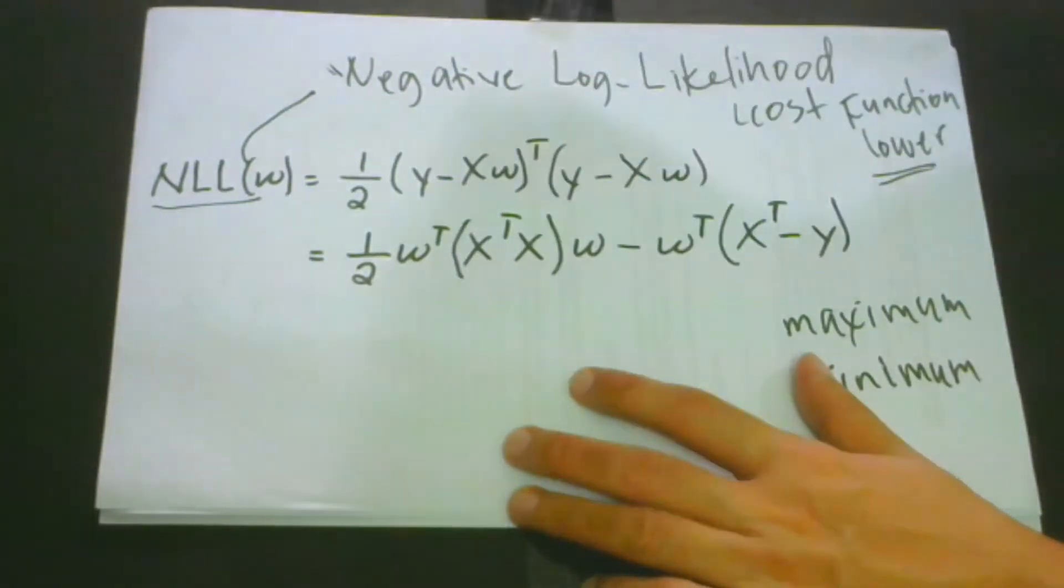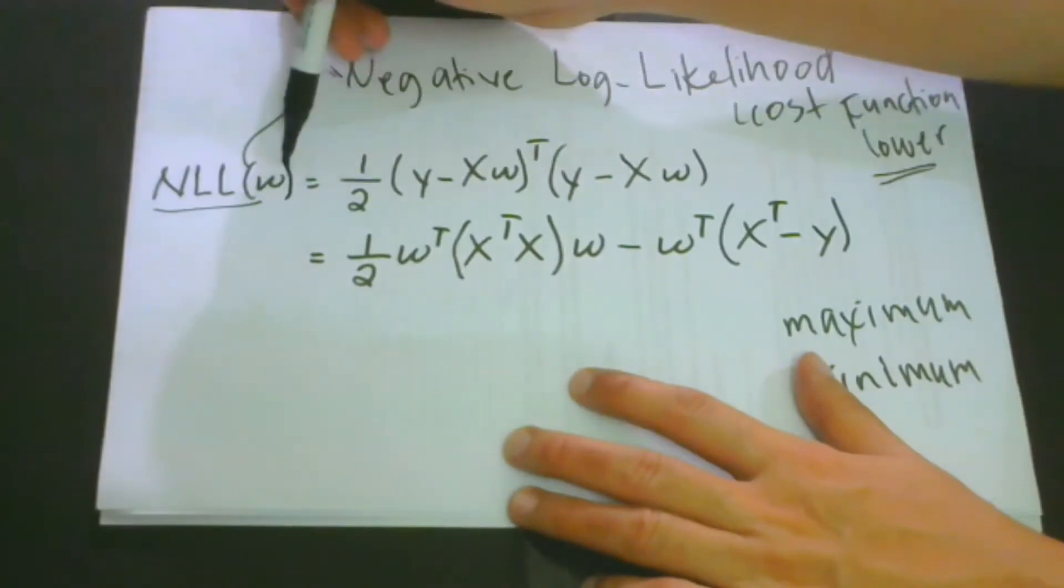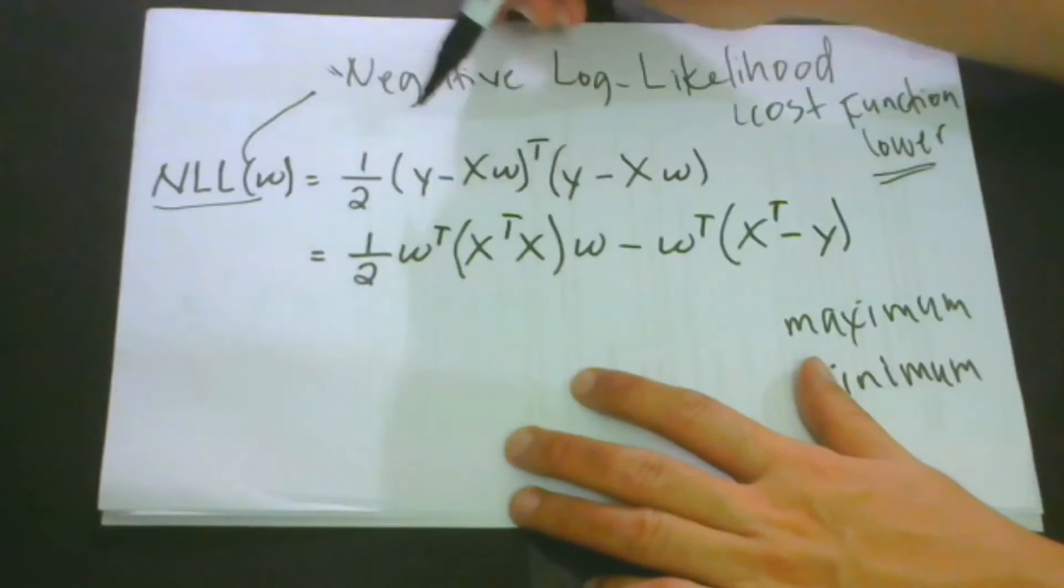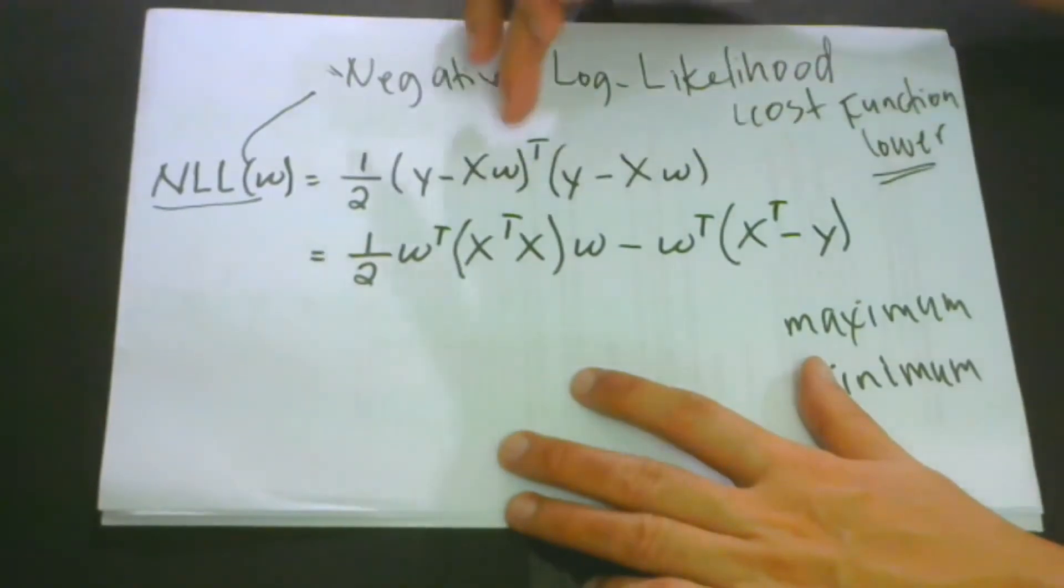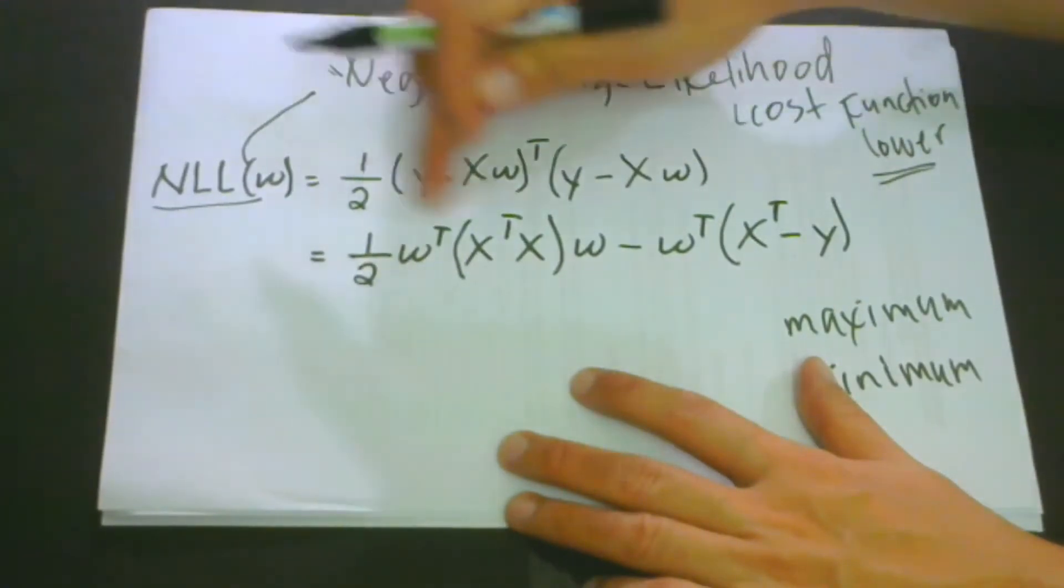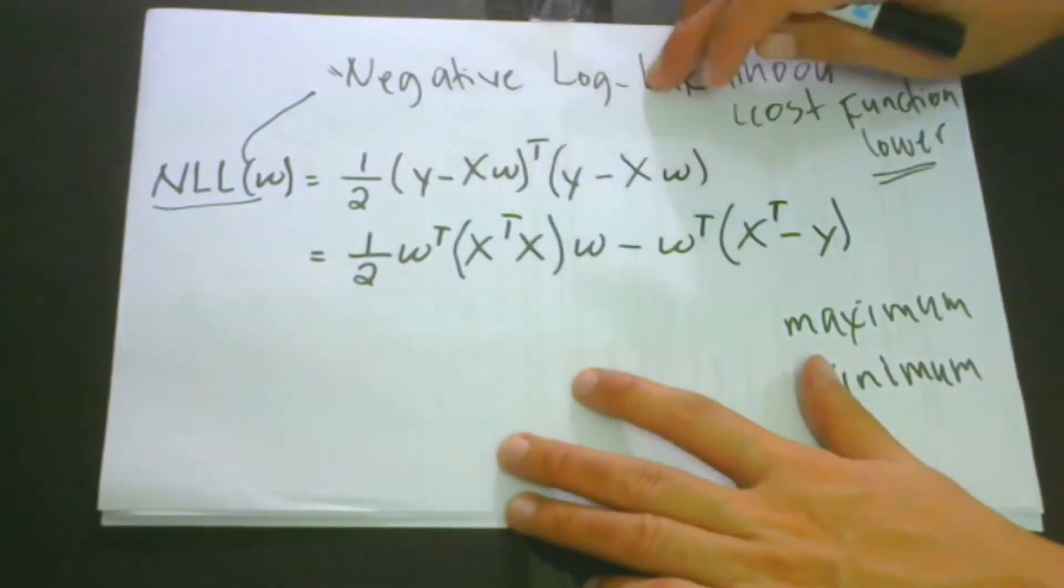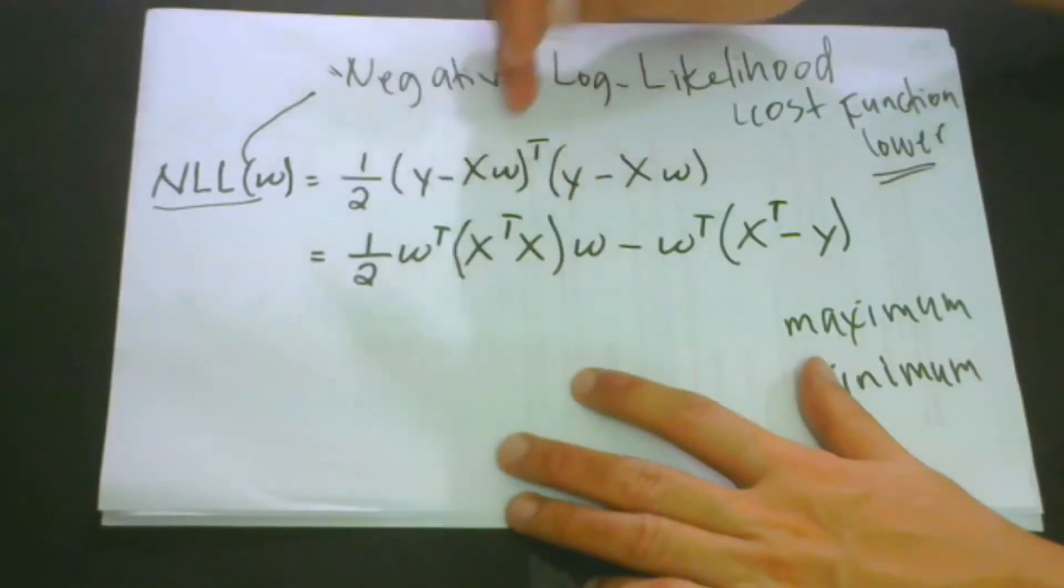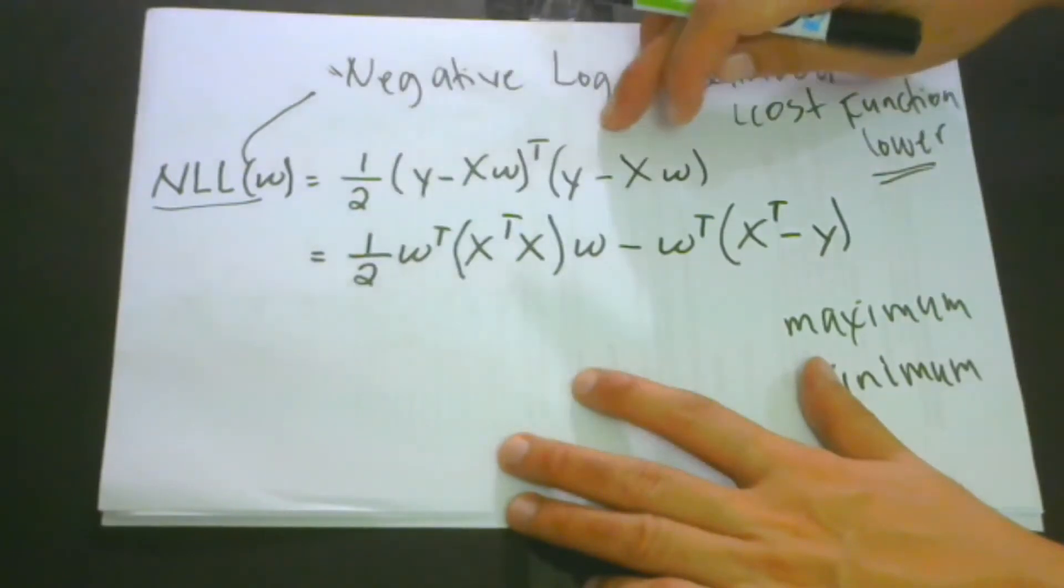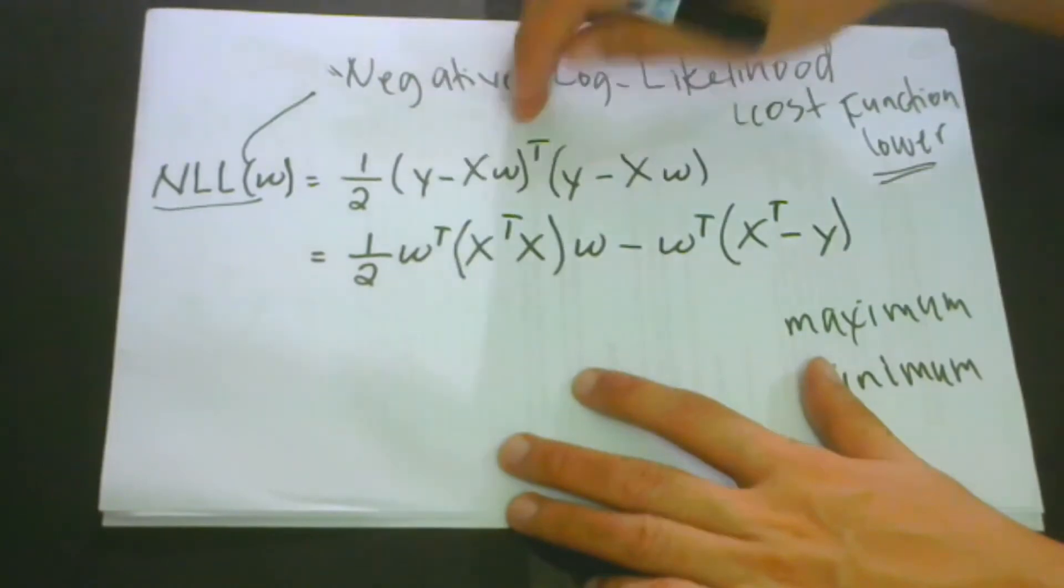We use this kind of form so that it would be easier for us to do the differentiation. We have NLL with respect to W because we are getting the parameter w: one half of the quantity (y minus xw) transpose times (y minus xw). If you could still remember in our lesson in Mastering Machine Learning Algorithm, we discussed what this transpose is.